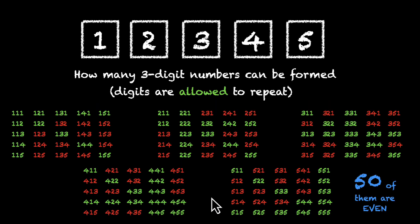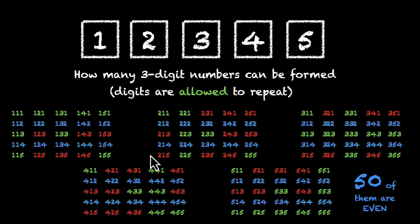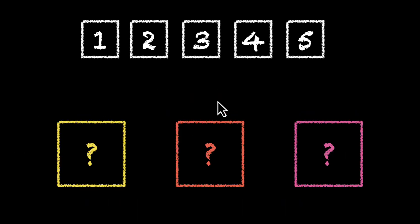And can you see which 50 of them are even? The numbers ending with 2 and the numbers ending with 4 — these are our 50 even numbers. So this was fairly straightforward.